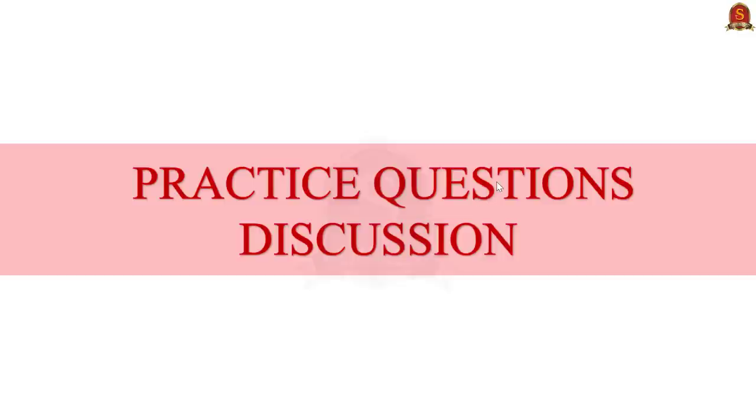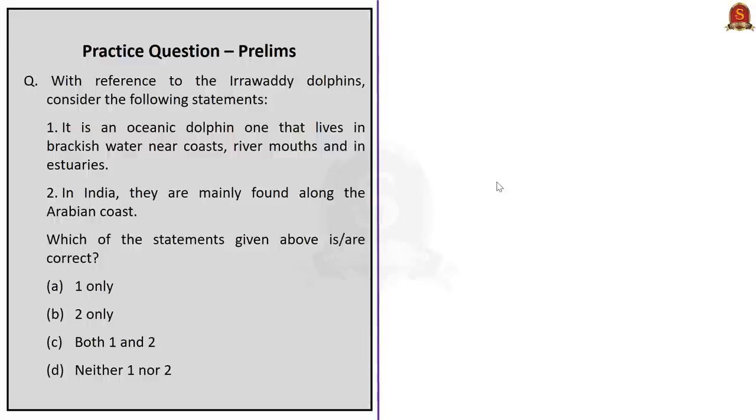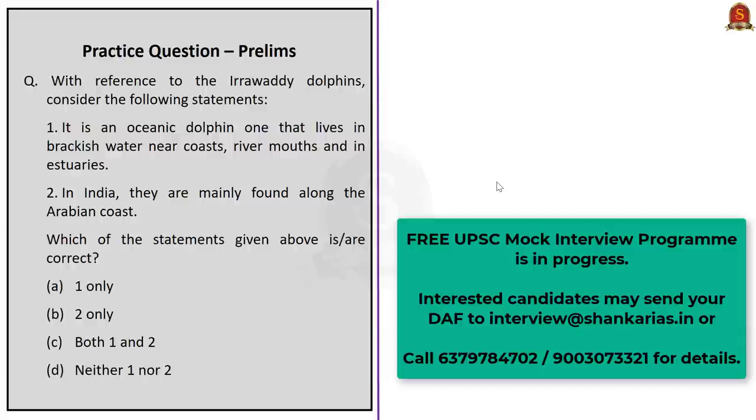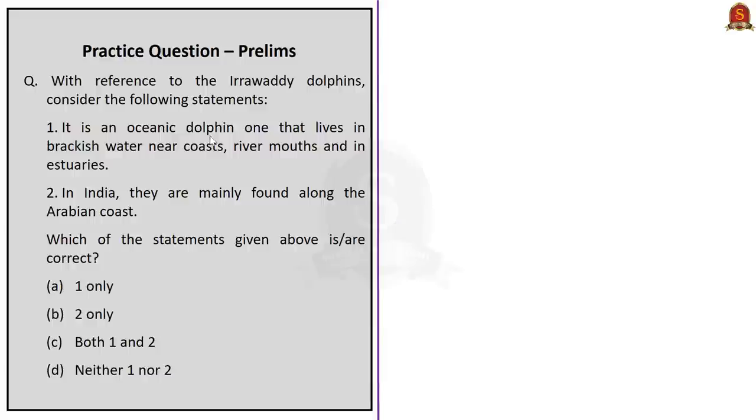With this, let us now move on to the practice question discussion. With reference to the Irrawaddy dolphins, consider the following statements. Statement 1, it is an oceanic dolphin that lives in brackish water near coasts, river mouths and in estuaries. Statement 2, in India, they are mainly found along the Arabian coast. So, we need to find the correct statement. When you look at statement 1, which says that it is an oceanic dolphin that lives in brackish water is correct. But, when you look at statement 2, it is incorrect. This is because in India, they are mainly found along the Odisha coast in Chilika and Gahirmatha and not in the western coast. So, therefore, the right option is option A, that is one only.